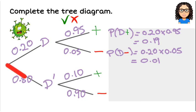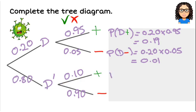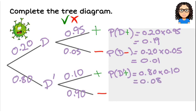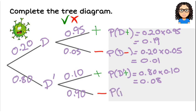Next combination is not having the disease and getting a positive result. Multiply these branches: 0.80 times 0.10 gives us 0.08. And our last combination is not having the disease and getting a negative test result, so 0.80 times 0.90 gives us 0.72.